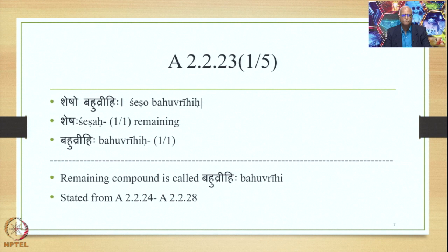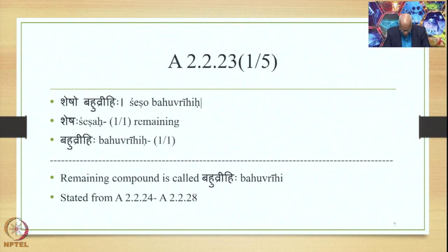Let us now study the Samasa Vidhayaka Sutras for the Bahubrihi Samasa. The first is 2.2.23, Shesho Bahubrihi. There are two Padas in this Sutra: Shesaha (Prathama Ekavachana, 1/1), meaning 'remaining,' and Bahubrihi (also 1/1). What this simply means is: the remaining compound is called Bahubrihi.